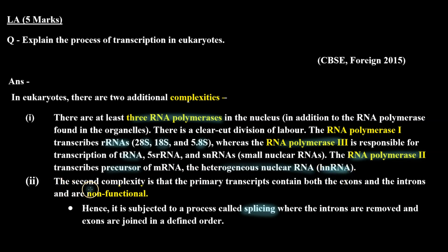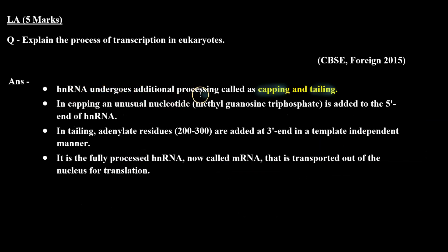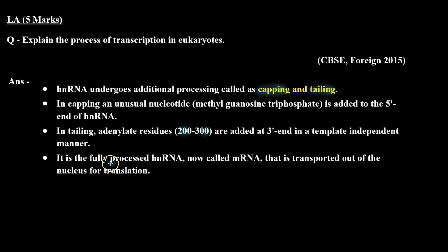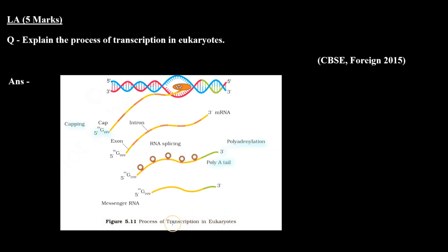The second complexity is that the primary transcripts contain both exons and introns and are non-functional; hence they are subjected to a process called splicing, where introns are removed and exons are joined in a defined order. hnRNA also undergoes additional processing called capping and tailing. In capping, an unusual nucleotide — methyl guanosine triphosphate — is added to the 5' end of hnRNA. In tailing, adenylate residues of around 200 to 300 are added at the 3' end in a template-independent manner. The fully processed hnRNA, now called mRNA, is transported out of the nucleus for translation.